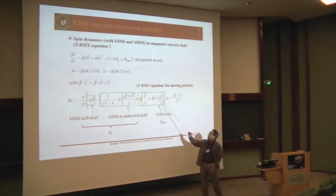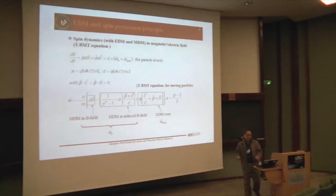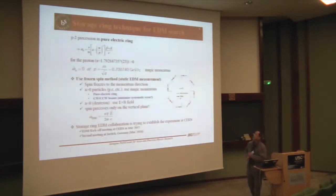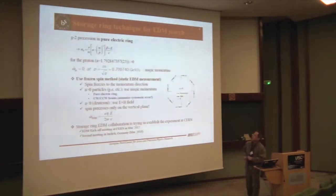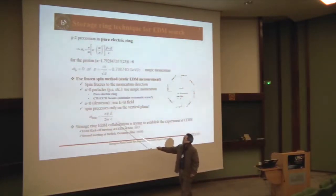If you don't use the B field, we call this pure electric ring. And as I said, if you use specific gamma factor, that means specific momentum. In this case, the second term goes away. For example, in the proton case, that momentum is what? 0.7 GeV per c. If you use that momentum, then all terms goes away. Only the remaining term is this one. Very simple.